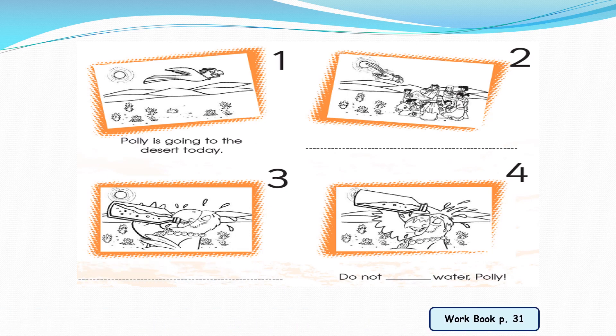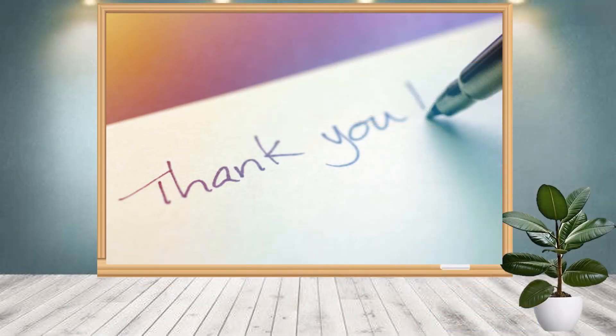Can you tell the story again without looking at the sentences? Number one: Polly is going to the desert today. Number two: She stops because she is thirsty. Number three: Polly drinks a lot of water. Number four: Don't waste water, Polly. This was the end of our lesson today. Thank you and see you soon, goodbye.